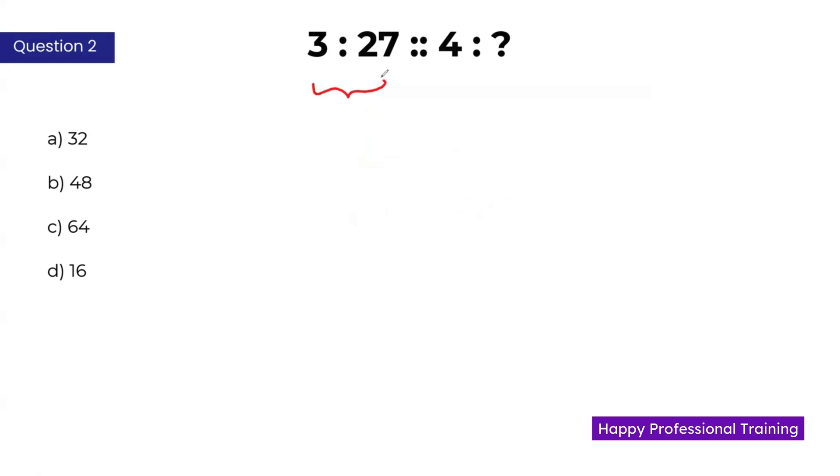Let's identify the pattern here. The second number represents cube of the first number. 3 cube is 27. Apply the same pattern to the second pair: 4 cube is 4 into 4 into 4, which is 64. C is the correct answer here.